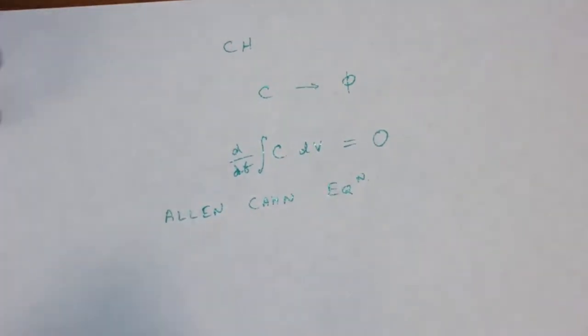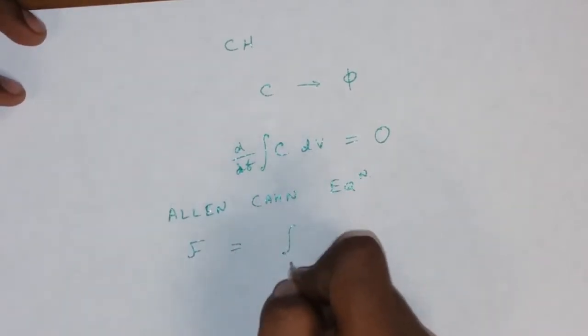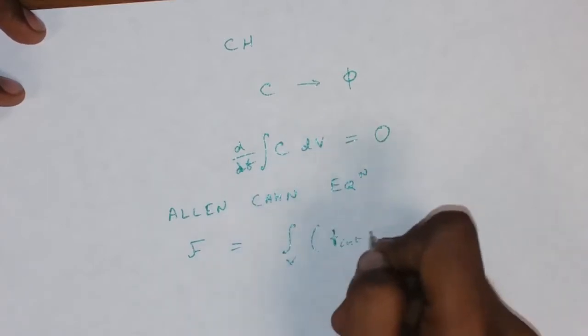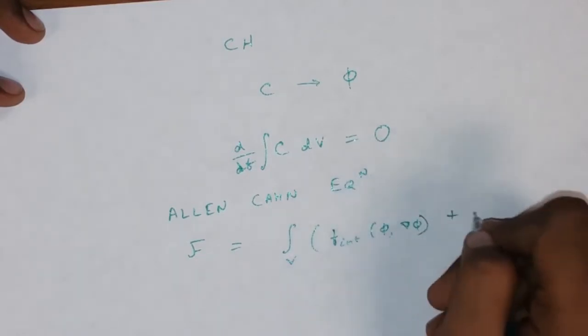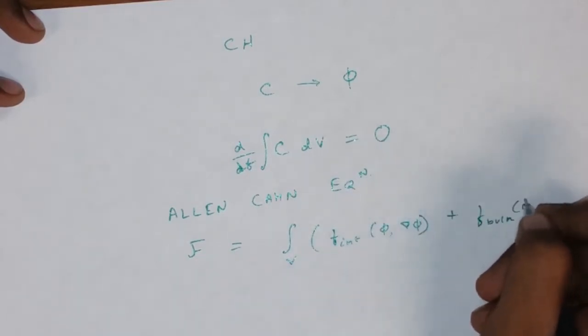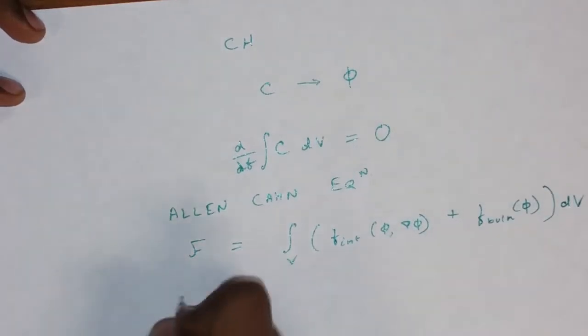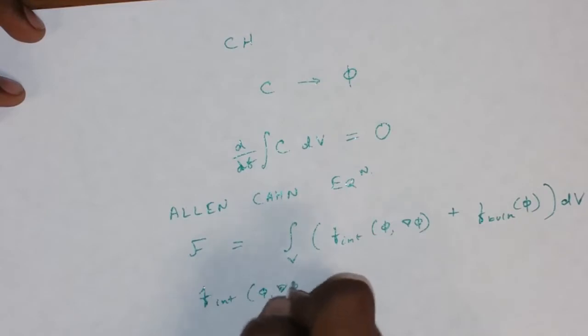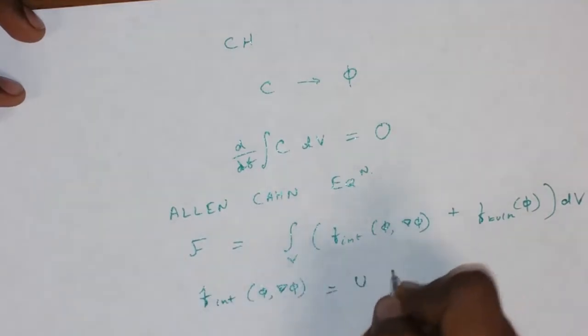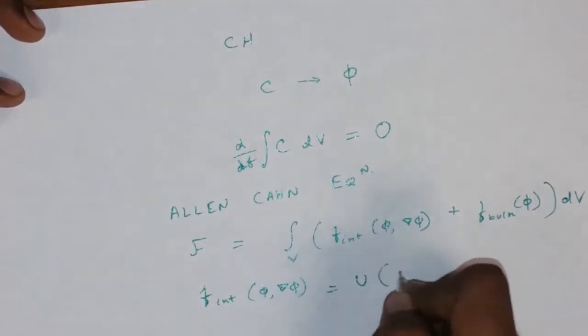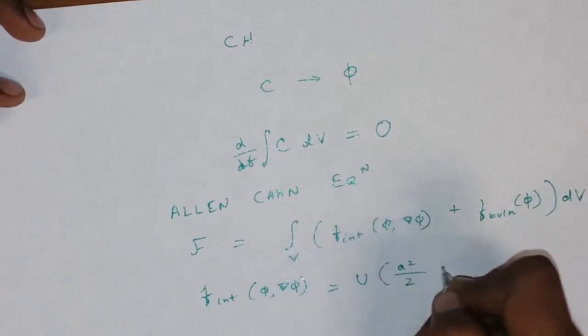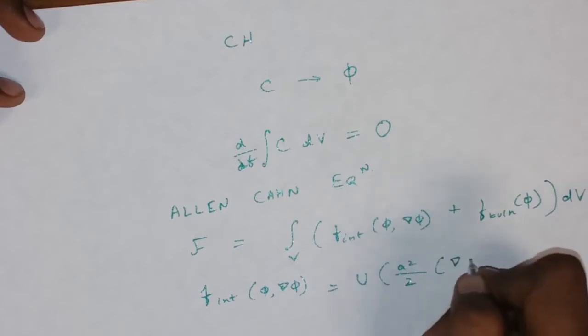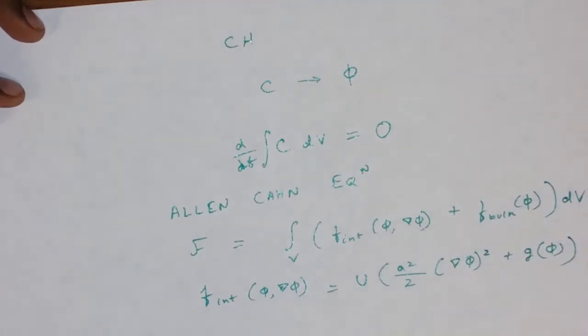Now, the Alan-Kahn equation is also represented by a free energy functional, where there is an interface term and a bulk term. Now, the free energy of the interface is defined by the U, which is an interfacial energy scale, times square of A divided by 2. And A, here is the characteristic length scale, which again defines your interface, times del phi square plus G of phi.